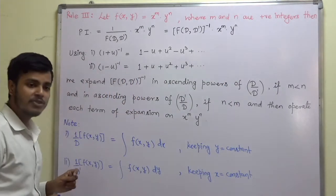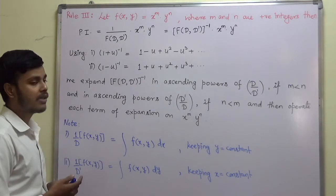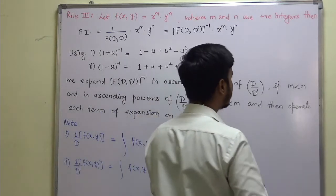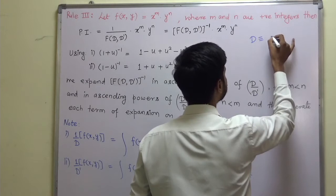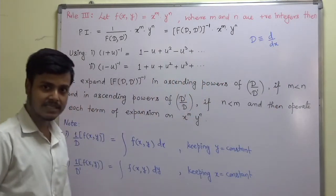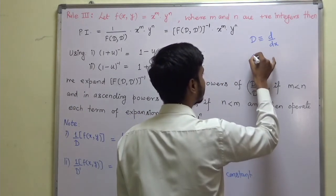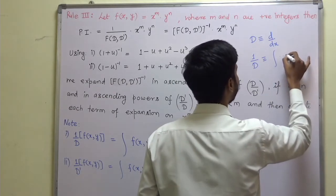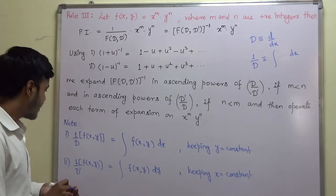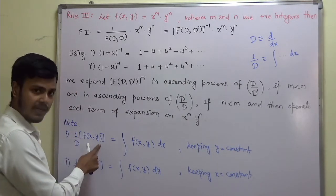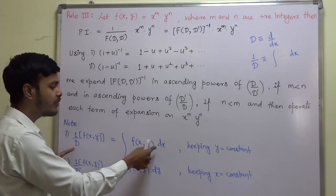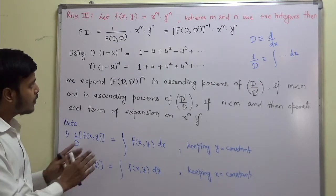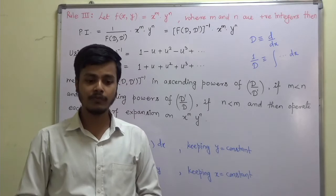A few remarks: as you know, D stands for derivative with respect to x. So if D is derivative with respect to x, then what is its inverse? Inverse of derivative is integration. So 1 by D stands for integration with respect to x, keeping y constant, and likewise for 1 by D-dash. I hope this rule is clear to you, so let us take a problem for better understanding.